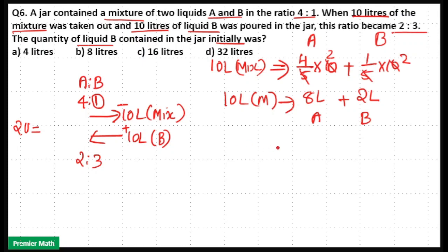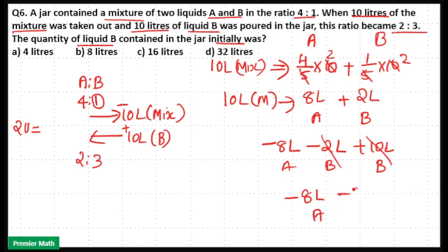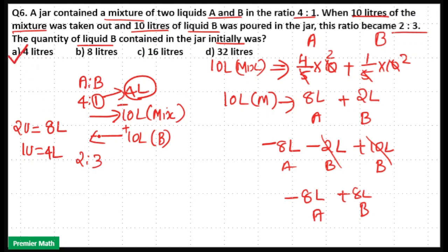In the first process, 8 liters of liquid A and 2 liters of liquid B are taken out. Then 10 liters of liquid B is added. Netting these out: minus 8 liters A and minus 2 plus 10 equals plus 8 liters B. That means 2 units equals 8 liters, so 1 unit equals 4 liters. In the 4 is to 1 ratio, the B part is 1 unit, which equals 4 liters. So the answer is option A: 4 liters.